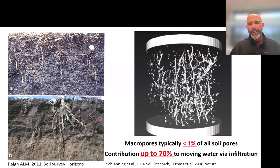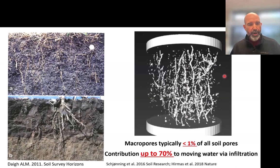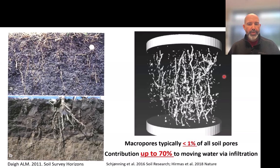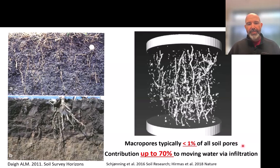When compaction occurs, bulk density goes up and you go from something well-aggregated with lots of macro pores to more of a solid mass. CT scans — just like medical imaging — show what's inside the soil. In this CT scan, the white areas are macro pores: root channels, earthworm pores, large pores. Though they make up less than 1% of all pore spaces, macro pores contribute up to 70% of water and air movement in the ground. A little compaction goes a long way in harming soil function.